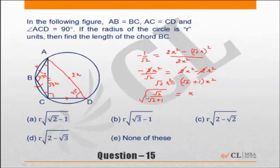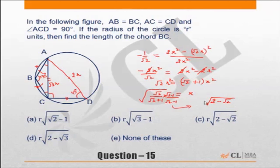Taking the square root and rationalizing — multiplying by (root 2 minus 1) over (root 2 minus 1) — it becomes root 2 times root 2, giving 2 minus root 2 over 1. So x equals r times this expression, giving the final answer. The answer is option C.